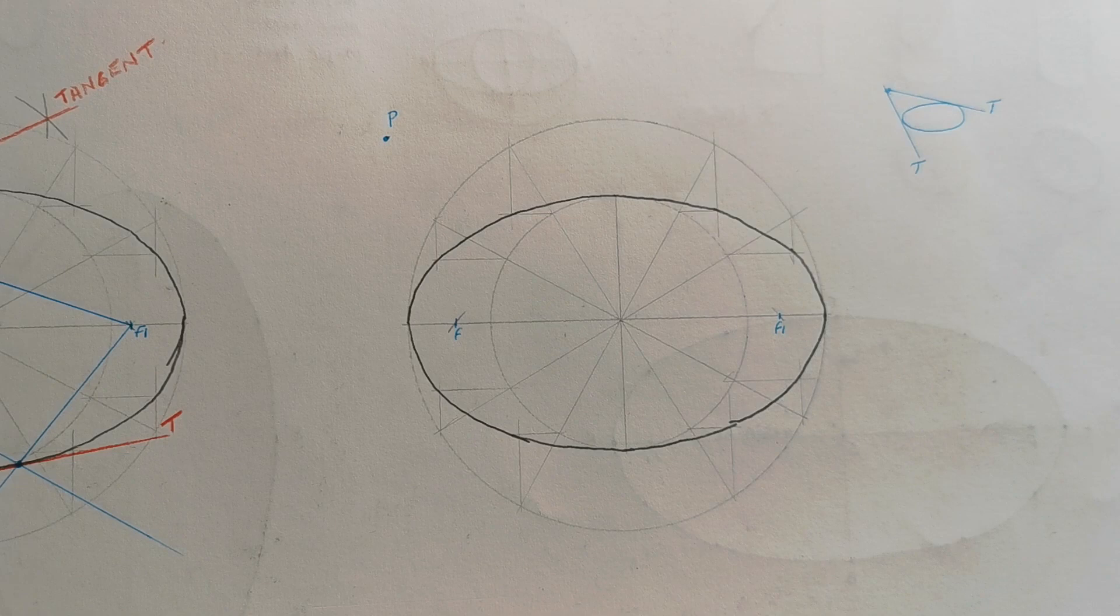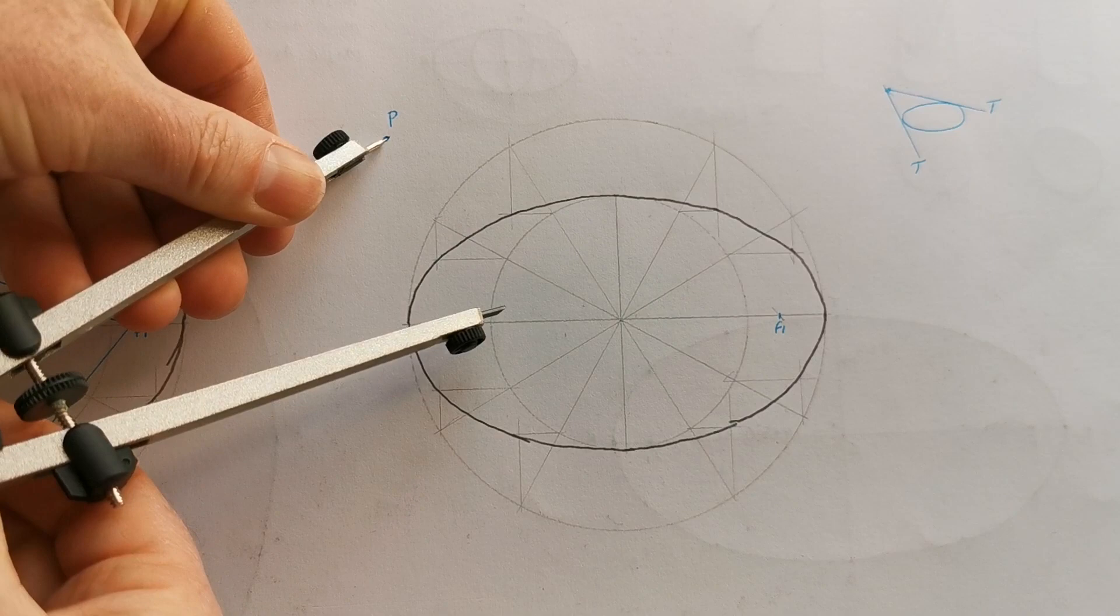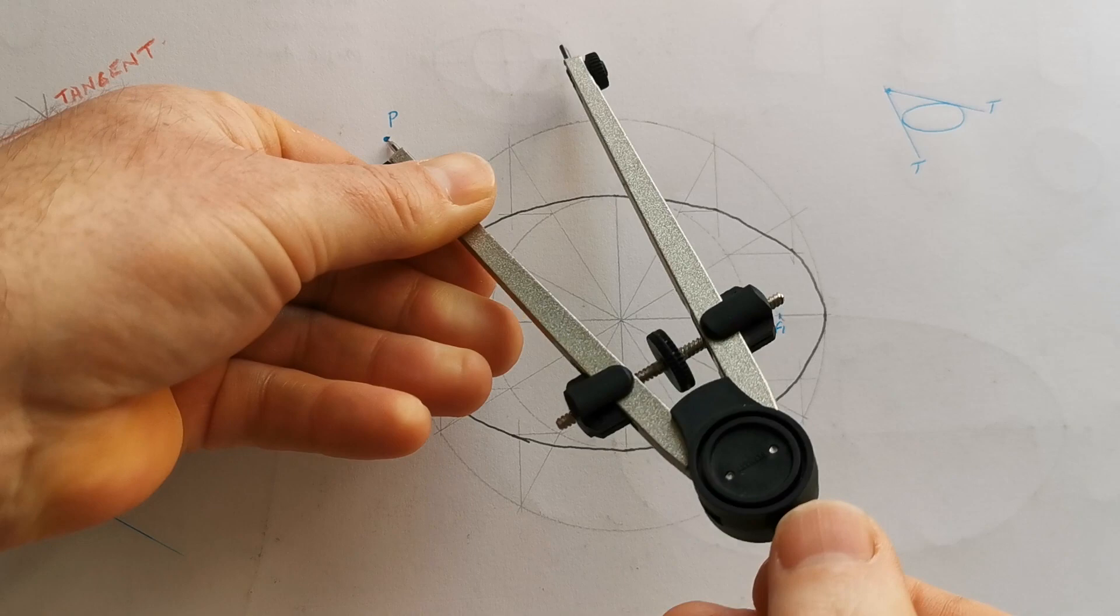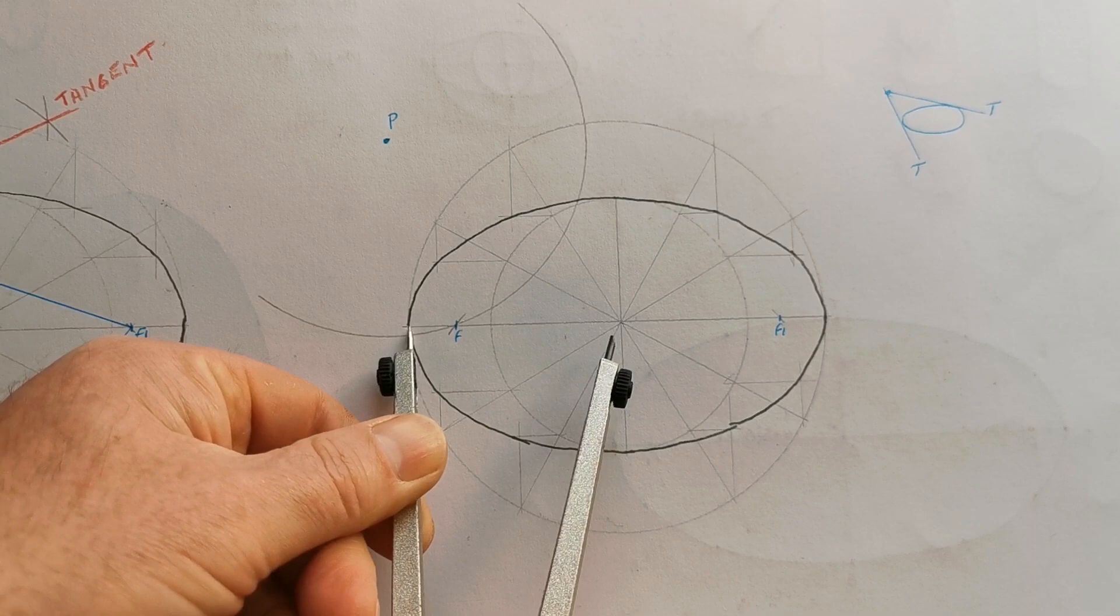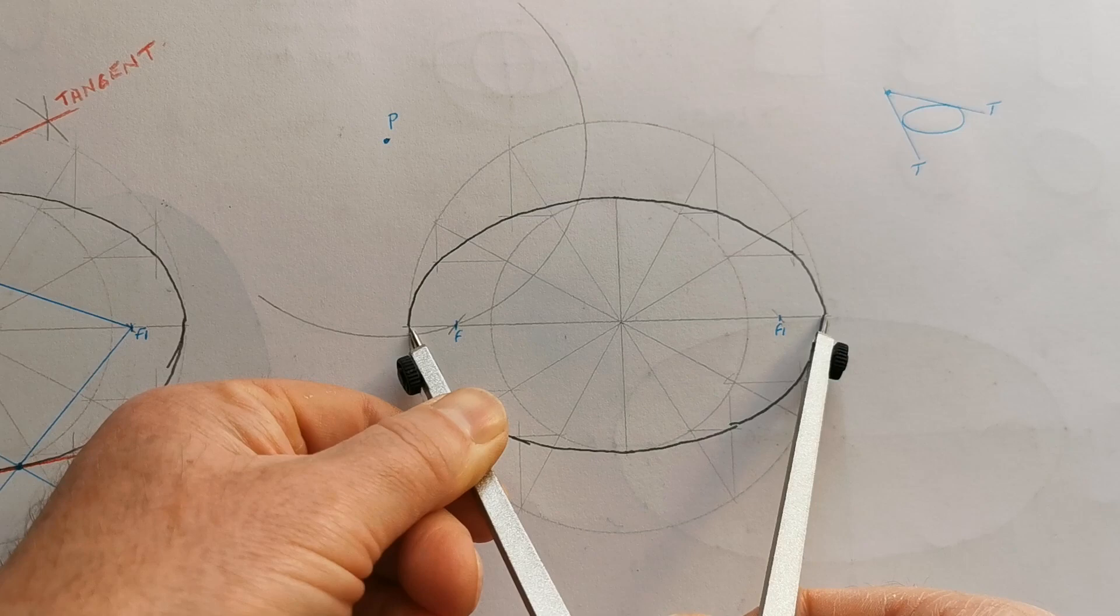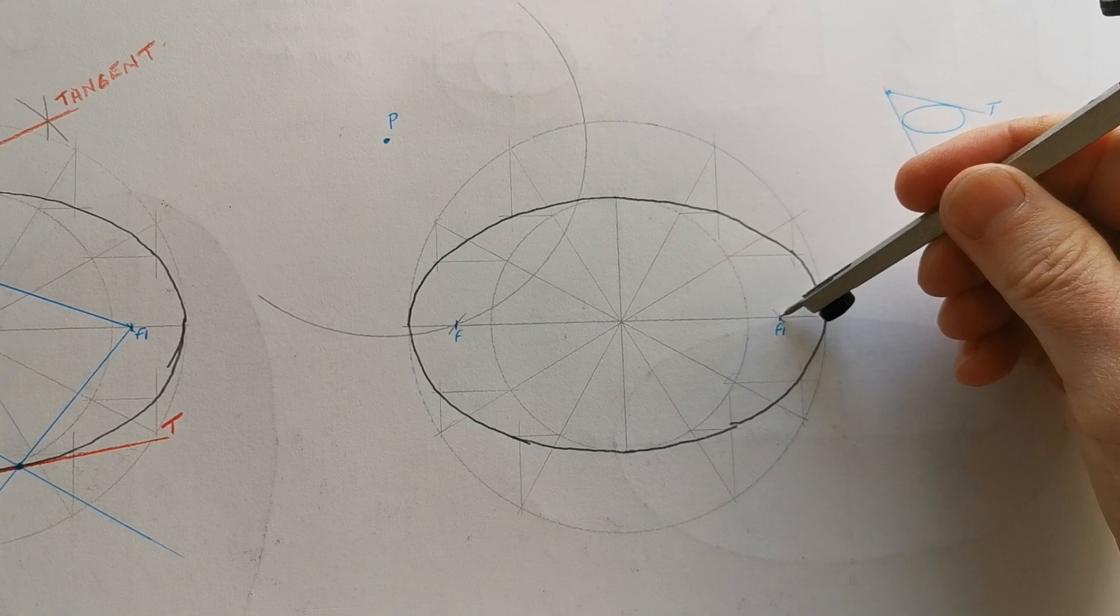Now the steps for this thing is: from P you want to draw an arc through the near focal point, a good big arc. That's going through the near focal point. Then you want to set your compass to the major axis and swing that arc from the far focal point.